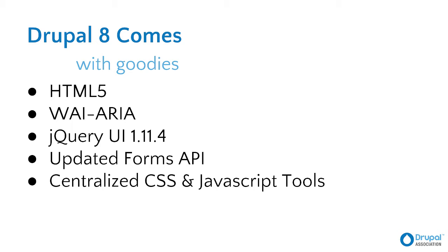We really worked to make Drupal as accessible as possible by default, so that instead of having something as an add-on you needed to install afterwards or work with as an extension of core, we wanted it to be an integral part of core so that sites — whether intentionally or not built to be accessible — inherited the best practices of web accessibility. Part of that comes with HTML5, which wasn't available before. It was a huge effort to convert both the front-end and back-end into HTML5.